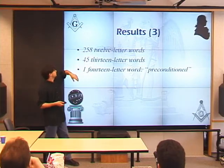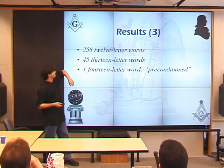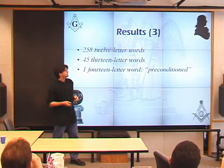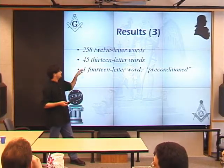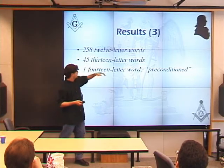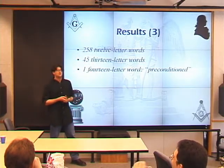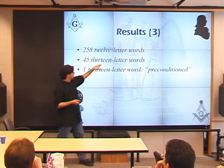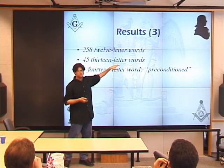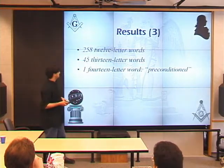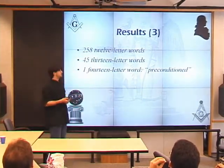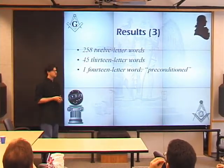I did a little check on the lengths of words to see if anything interesting was there. Out of the million boards, it found 258 different 12-letter words. There were 45 thirteen-letter words, going up to 'acquaintances' and 'mercenariness.' And there was one 14-letter word: 'preconditions.' That was the unique 14-letter word found in those million boards.